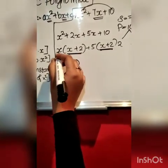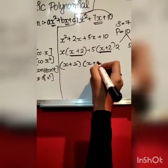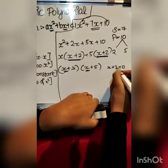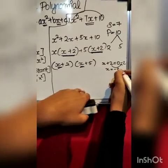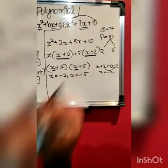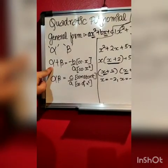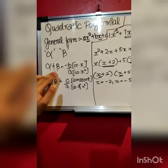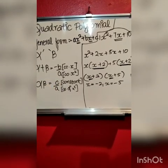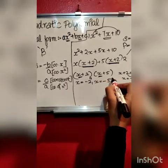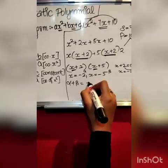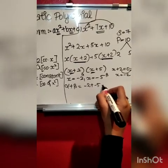x plus 2 is common in both terms. So we take x plus 2, and what is left is x plus 5. Setting each factor to zero: alpha equals minus 2 and beta equals minus 5. So alpha plus beta is minus 2 plus minus 5, which is minus 7.